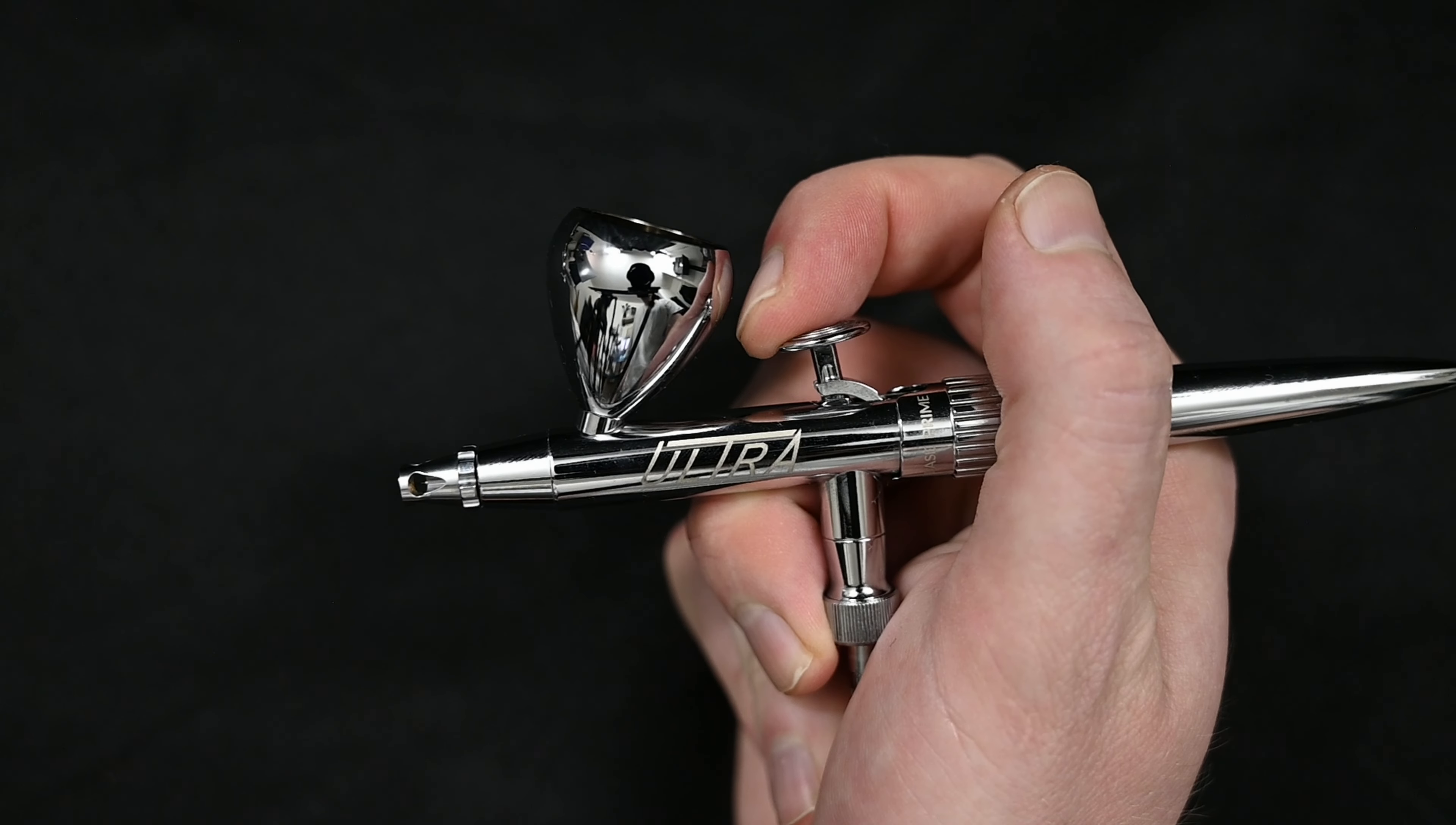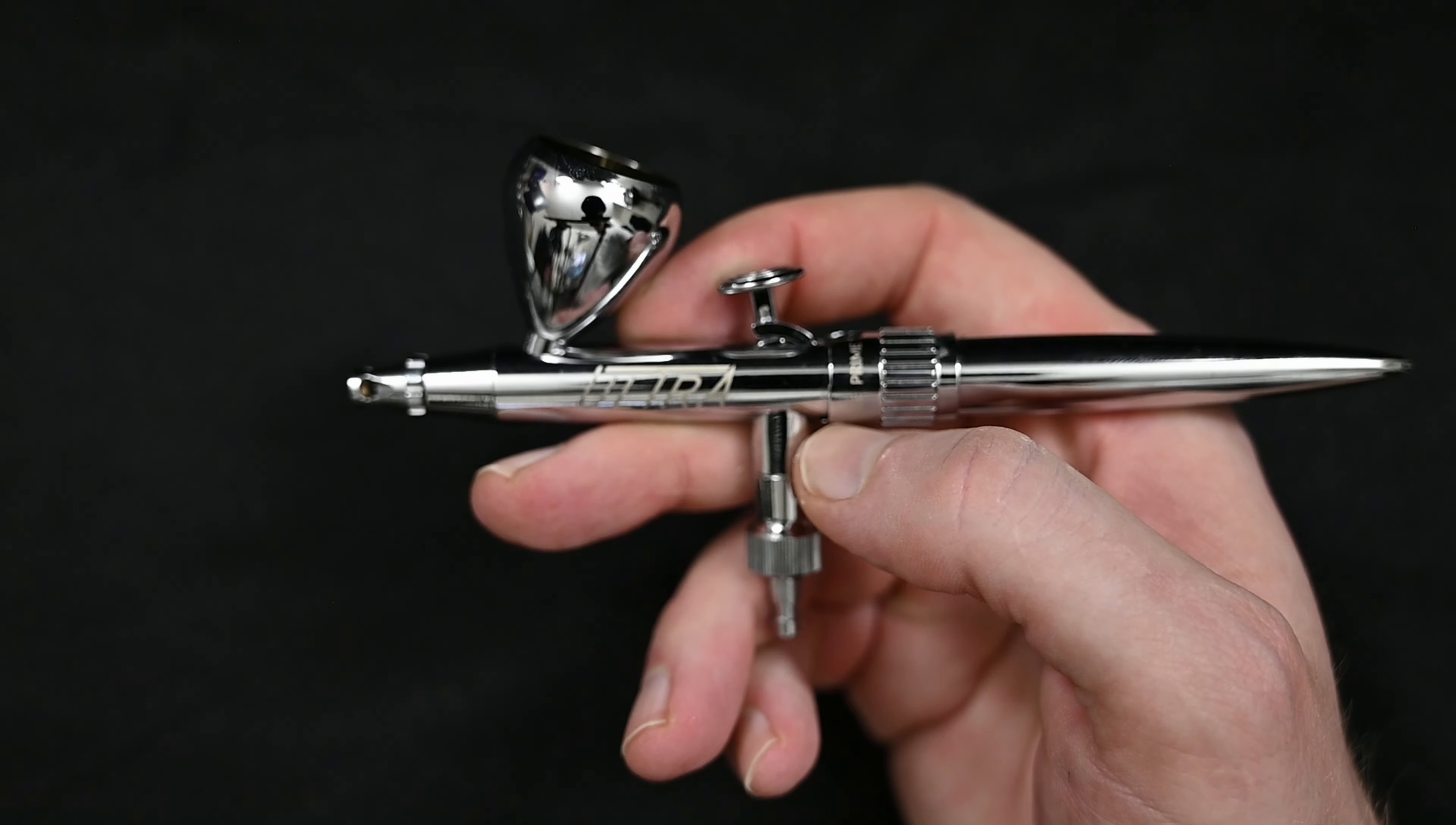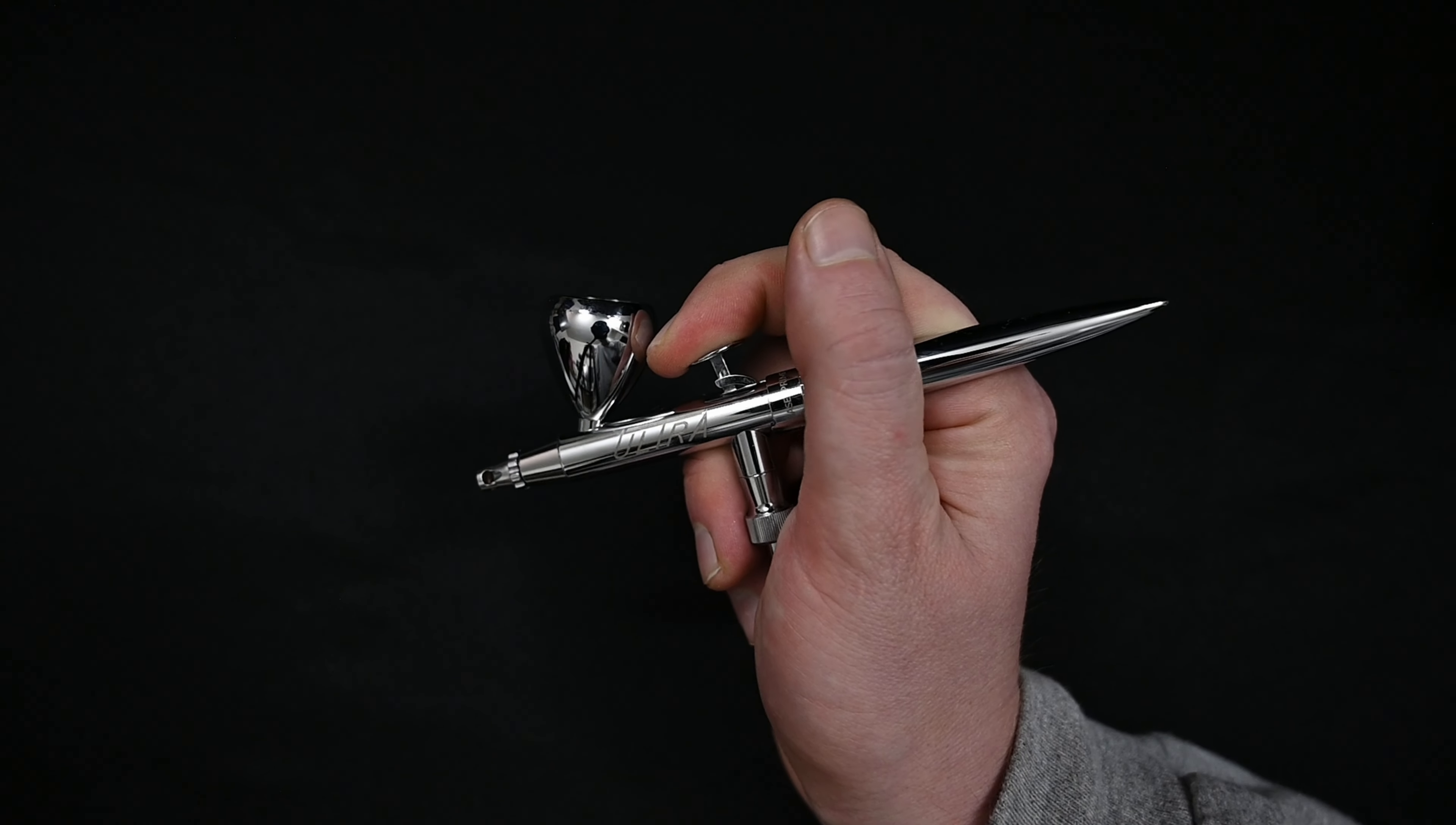And a pretty cool addition for new painters is that you cannot pull back on this trigger unless you press down first. That's very important to build up some good airbrush painting techniques. You always want to press down first to get air before you pull back on the trigger. And the same thing goes in reverse. If you want to stop the paint, you first push the trigger all the way forward, and then you release the air. That'll give you a lot better airbrush control, and it helps a ton with tip dry.